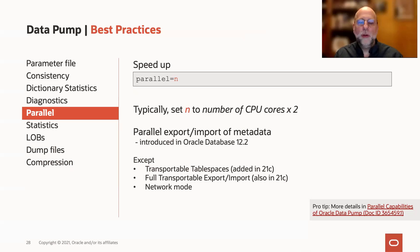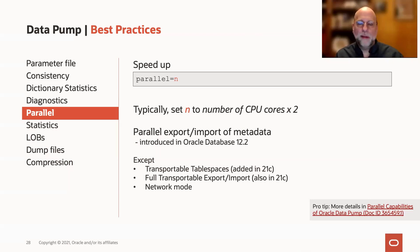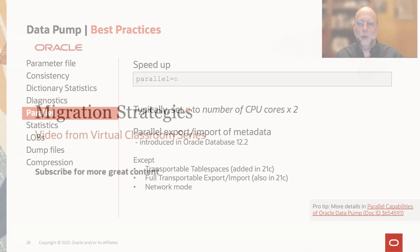Since 12.2, we have parallel export and import of metadata for dump file jobs. But we didn't add parallelism for transportable jobs — both transportable tablespace and full transportable — until 21C. And sadly, we still don't have parallelism for network mode. That has to do with the fact that we are exporting from one database simultaneously while importing into another, which is very different from exporting everything to a dump file and importing it later.